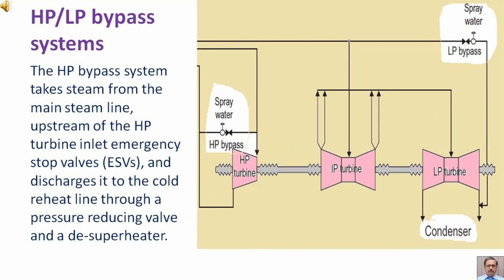HP bypass system takes steam from the main steam line, upstream of the HP turbine inlet emergency stop valve, and discharges it to the cold reheat line through a pressure reducing valve and a desuperheater.